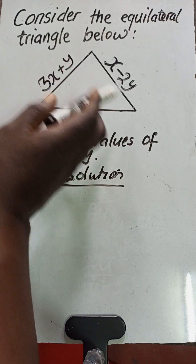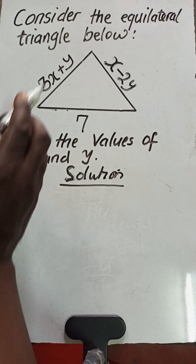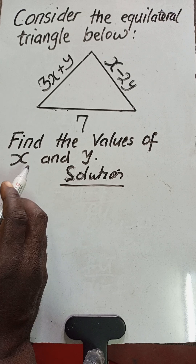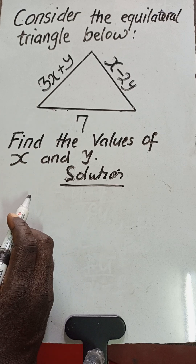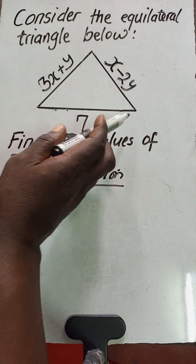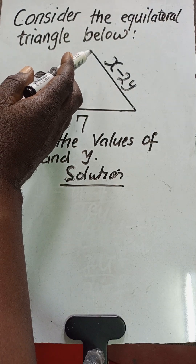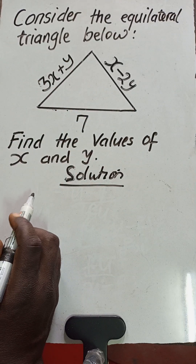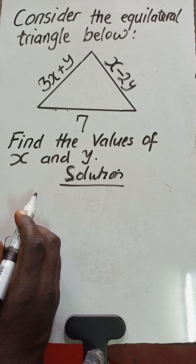Since two of the sides have been expressed in terms of two variables, x and y, it will make sense to come up with two equations so that we can solve them simultaneously, because we have two unknowns. We'll form the first equation by equating one variable side to the other, and the second equation by equating the remaining sides — giving us two simultaneous linear equations to solve for x and y.